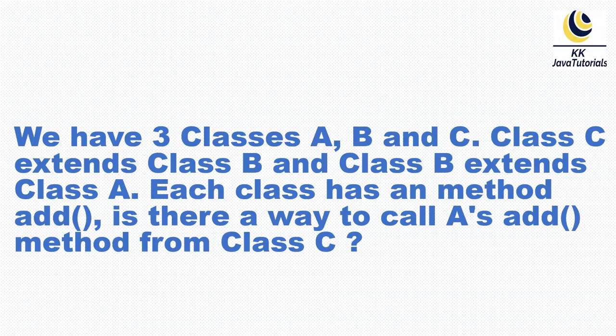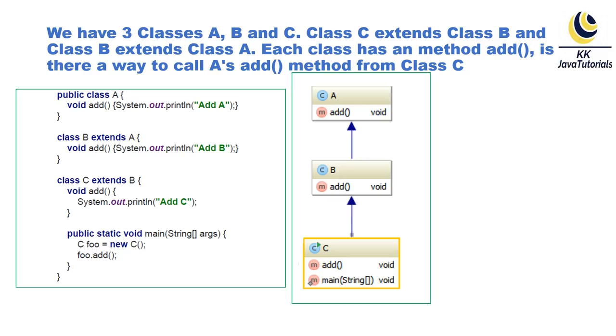Let's try to understand the answer to this question. Here you can see the inheritance relationship among classes is shown in this diagram where every class has an add() method with the same signature. Thus, Class B is overriding Class A's method, and Class C is overriding Class B's add() method.